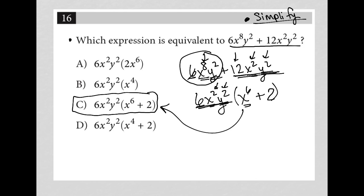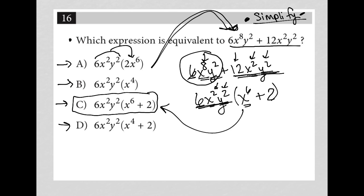You could also take this same strategy and move in the opposite direction — look at the answer choices and ask which one, when you simplify it, will equal the starting expression. Is it true that multiplying those terms together gives you the original? It's not true for choice A, not true for choice B, it is true for choice C, and not true for choice D. So two different ways to go about it: from question to answer, or from answers to question.